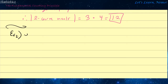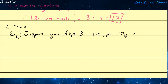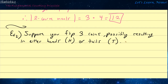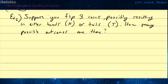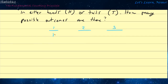Let us demonstrate with another example. Suppose you flip three coins. How many possible outcomes are there? We have three coins — one, two, three. For the first we can either get heads or tails, heads or tails for the second, and heads or tails for the third.